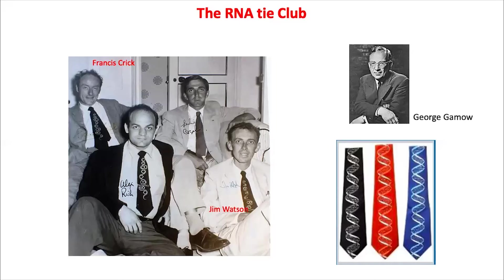A group of friends led by George Gamow and Jim Watson decided to form a club. The members came from different countries, though many were based in the UK and the US. They were very excited about all the new information coming out in molecular biology. Gamow proposed that this group would form what would be called the RNA Tie Club, and each member would be given a code name related to an amino acid.